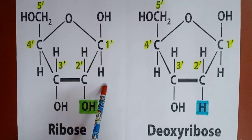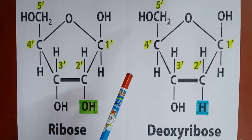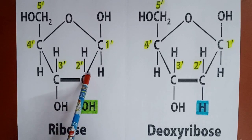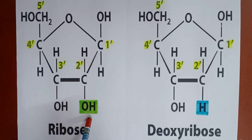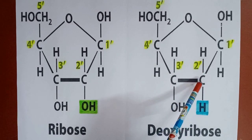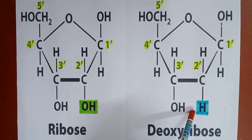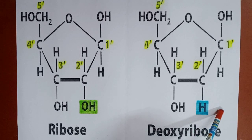Both hydroxyl and hydrogen groups are the same in both ribose and deoxyribose. The only difference is in the second carbon. In ribose sugar you can see one hydrogen and one hydroxyl group at the second carbon. In deoxyribose sugar, here you can see both are hydrogen — one oxygen is not there. That is why it is called deoxy, meaning one oxygen is removed. This is the only difference between ribose and deoxyribose sugars.